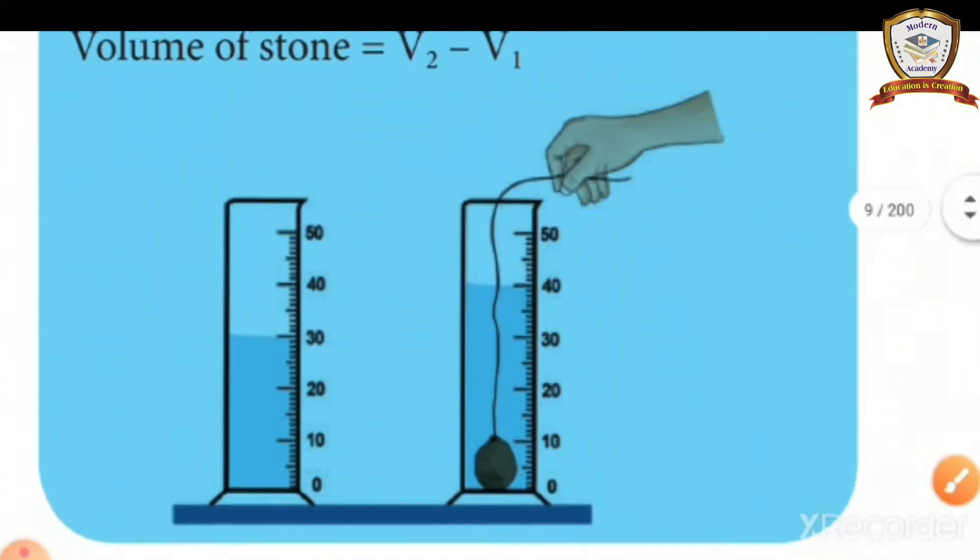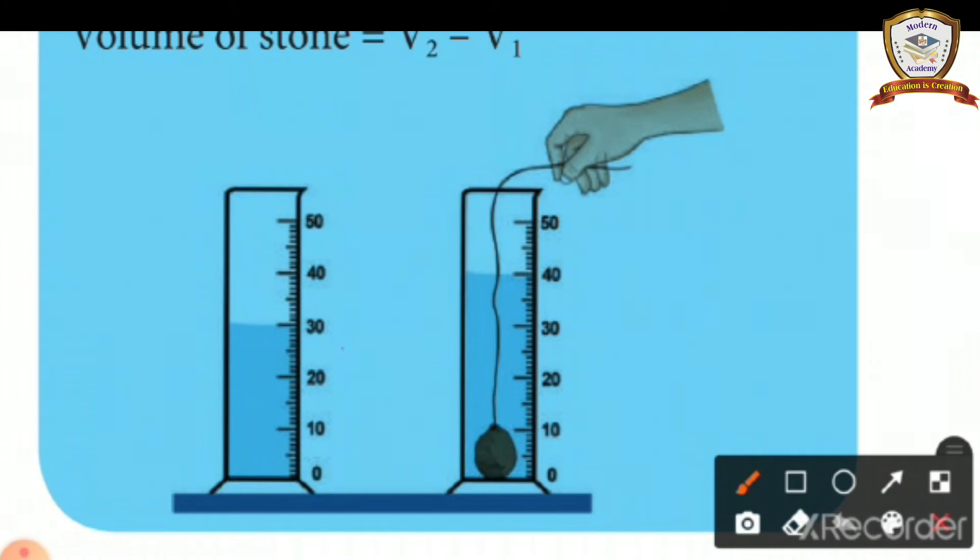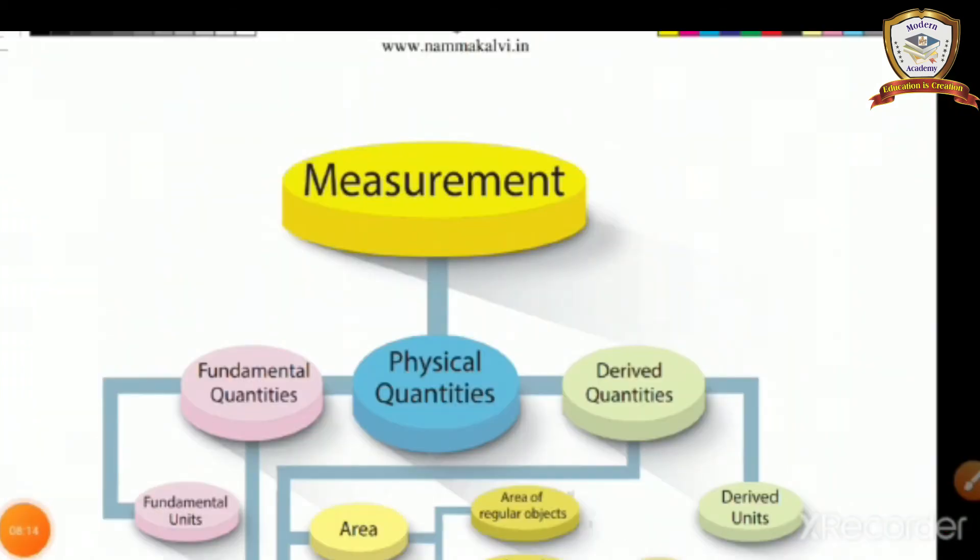Listen carefully. First one is measuring cylinder. 30 ml water will be poured, then a stone by using thread. The amount of water is increased.